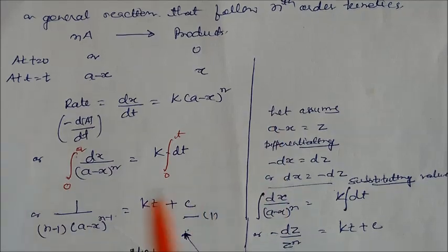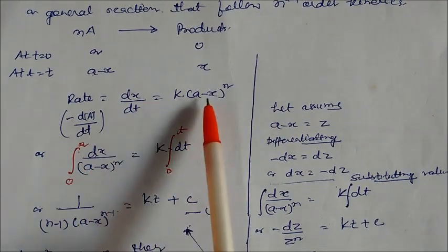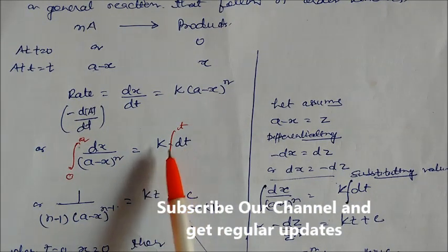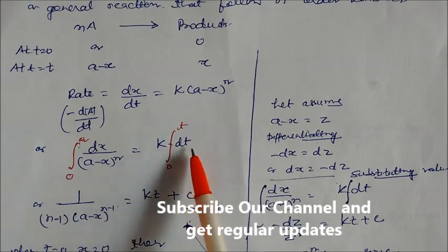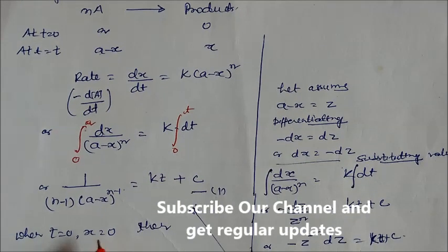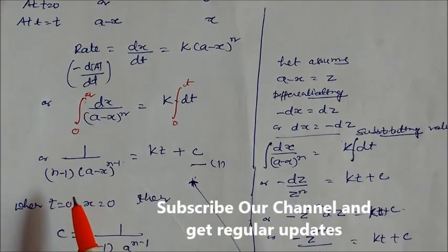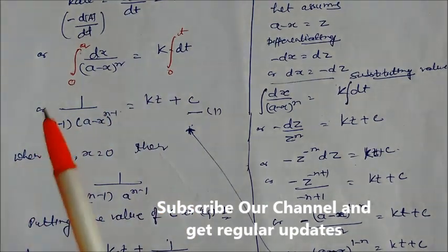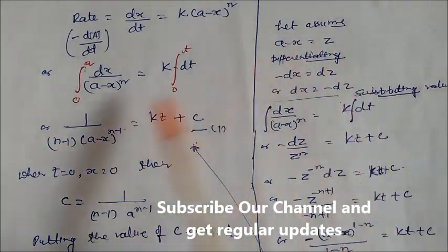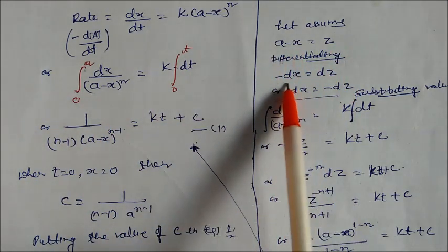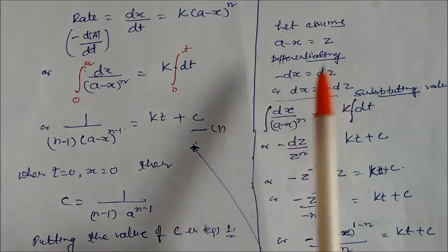If you want to write the integral form, take dx by (a minus x) to the power n equal to k dt. On integrating, the limits will be 0 to t for time and 0 to initial concentration. To integrate, let us assume a minus x is z, so differentiating gives minus dx equal to dz, or dx equal to minus dz.